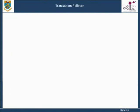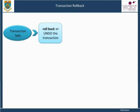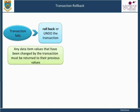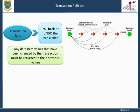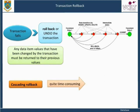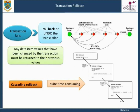Transaction rollback: if a transaction fails for whatever reason after updating the database, it may be necessary to rollback or undo the transaction. Any data item values that have been changed by the transaction must be returned to their previous values. The log entries are used to recover the old values of data items that must be rolled back. Cascading rollback can be quite time-consuming. That is why most recovery mechanisms are designed such that cascading rollback is never required.